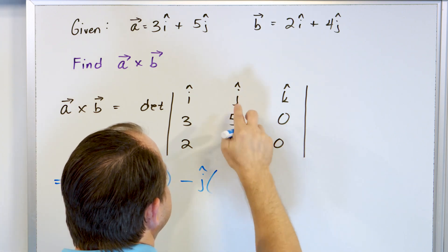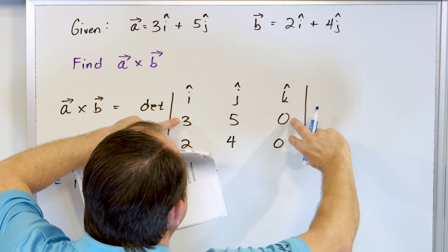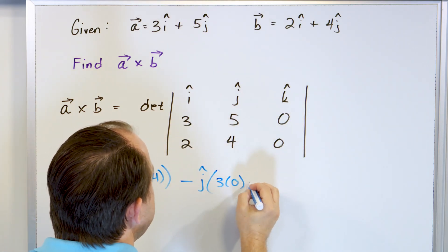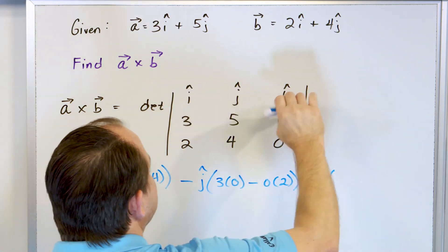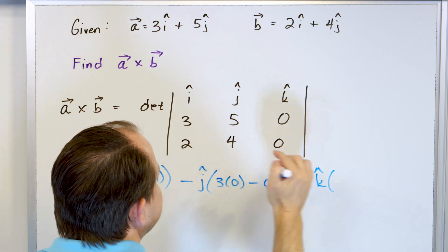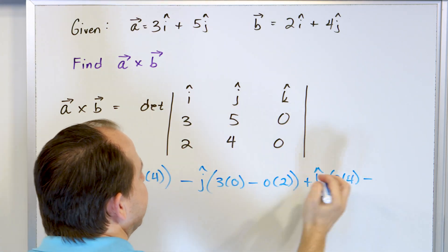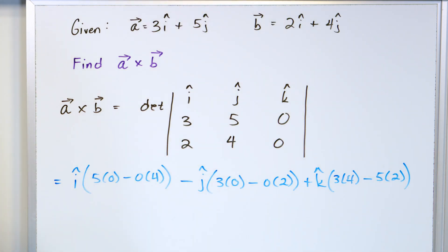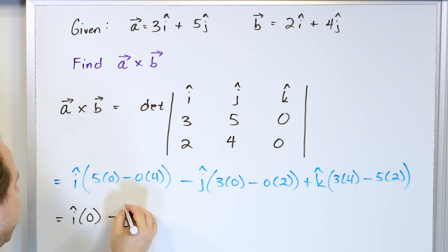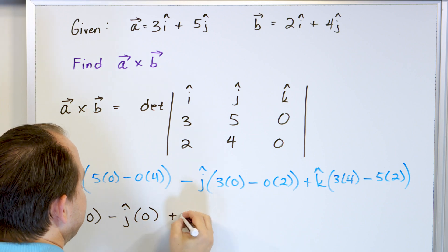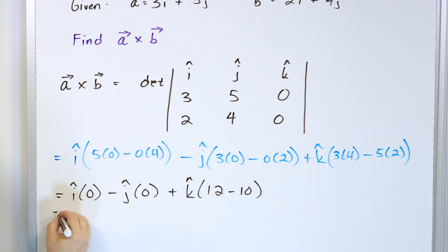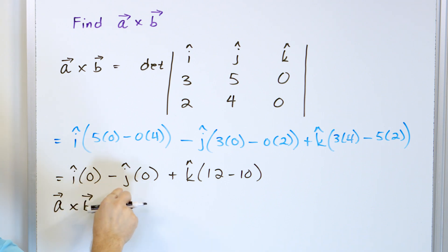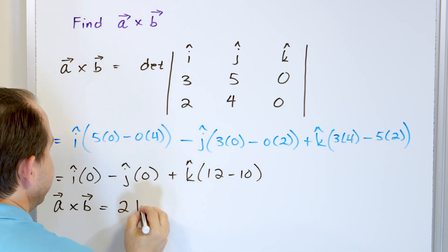Now evaluating: the i component gives 0 minus 0 = 0. The j term gives minus(0 minus 0) = 0. The k component gives 12 minus 10 = 2. So vector A × B equals 0i + 0j + 2k — it's just 2 in the k direction. This vector has a length of 2 pointed upward in the positive Z direction. And notice we didn't need any drawings or the right-hand rule — taking the determinant is essentially one line of math.